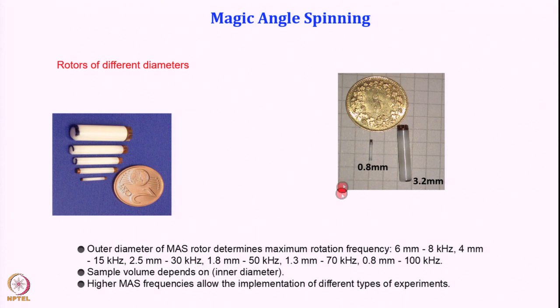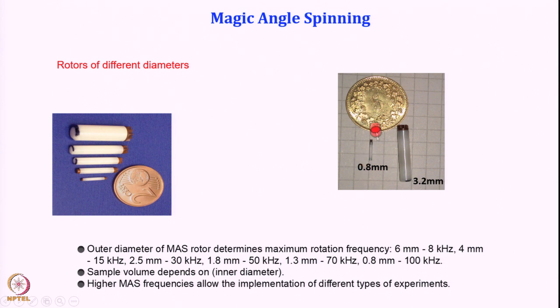As we miniaturize the rotor size, the sample that we can pack inside is also going to be very small. Sample volume depends on the inner diameter of the rotor. The material must be very stable, which is why it is made of zirconium oxide. There is a top cap with fins that drives the spinning. Smaller size means faster rotation, and bigger size means slower rotation. This also determines what kind of experiments we can implement. When spinning fast we can average out stronger interactions.